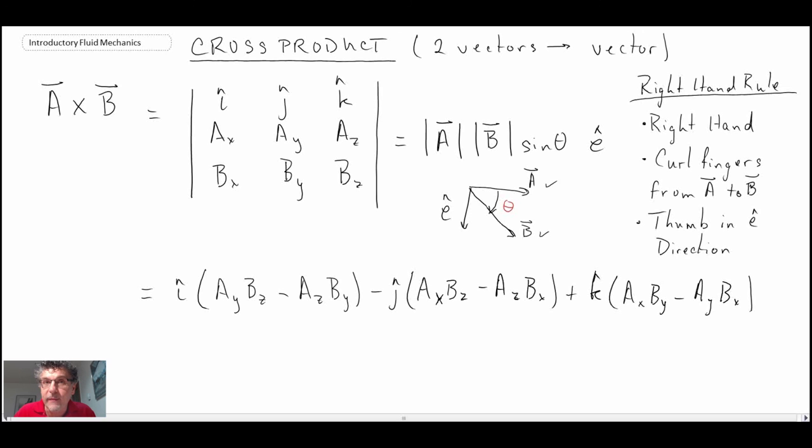So, that is the dot product and the cross-product. And we'll be using dot product mainly for mass flux, and cross-product when we look at vorticity, which represents the circulation in a flow field, and we'll look at that later on in the course. Those are two very important vector operators that we'll be using.